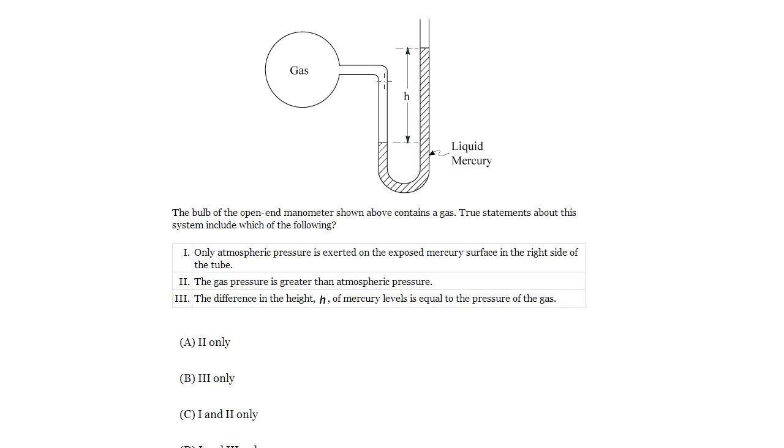Let's look at the choices. Statement I: Only atmospheric pressure is exerted on the exposed mercury surface on the right side of the tube. Yes, this is true. If you think about what forces are acting upon the mercury on this side, it's only the pressure downwards from the air that's pushing down on this.